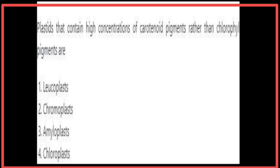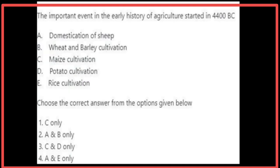Plastids that contain high concentrations of carotenoid pigments rather than chlorophyll pigments are chromoplasts. The most important event in the early history of agriculture starting in 4400 BC is maize cultivation — that is, C only.